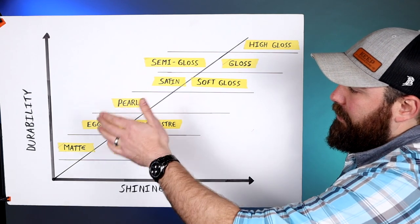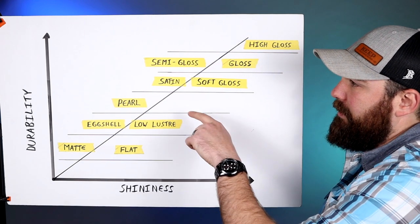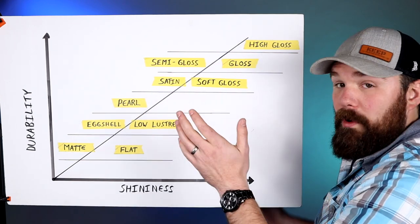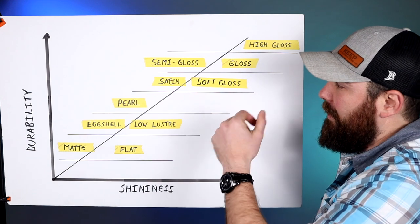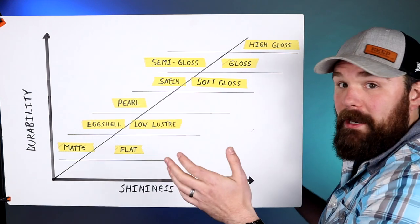And then moving on up, I put pearl here just because it kind of completes the chart. But as far as I know, I'm sure one exists, but there's no equivalent to that in an exterior product, at least none that I use.